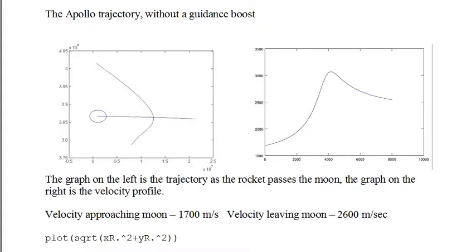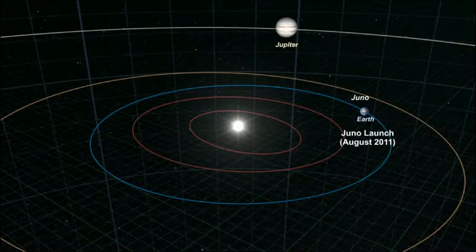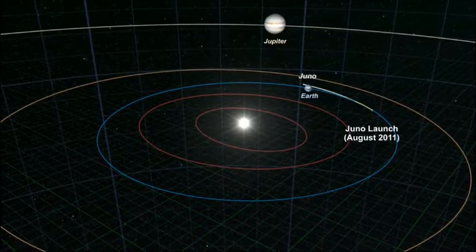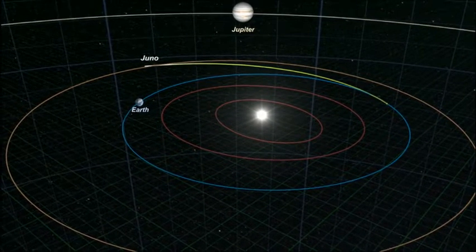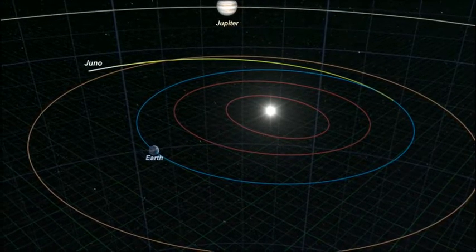The Juno probe does a flyby of Earth two years into the flight. So let's have a look at this trajectory. This is a NASA simulation. It was launched in August 2011 from Earth.